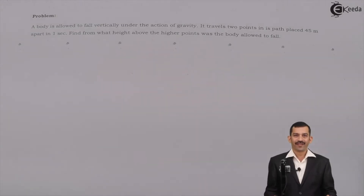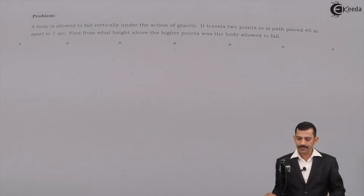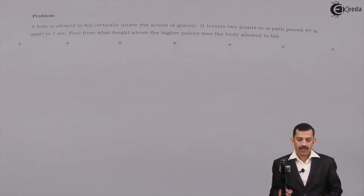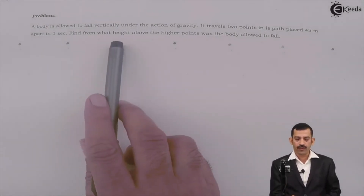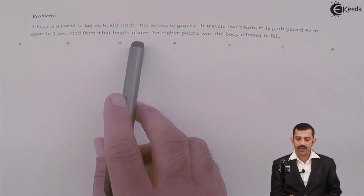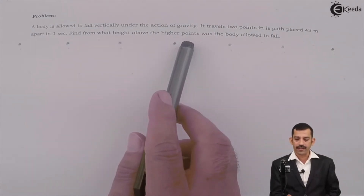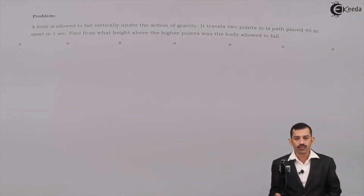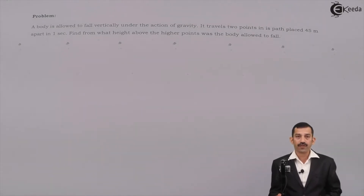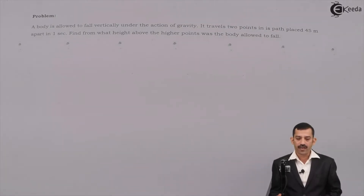Hi friends, we will discuss one problem on motion under gravity. What is given? A body is allowed to fall vertically under the action of gravity. It travels two points in its path placed 45 meters apart in one second. Find from what height above the higher point was the body allowed to fall.